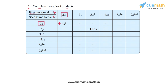Similarly, if you take 3x² as your first monomial from the topmost row and -5y as your second monomial from the leftmost column, the product you get is -15x²y, because 3 × (-5) is -15 and x² × y is x²y.